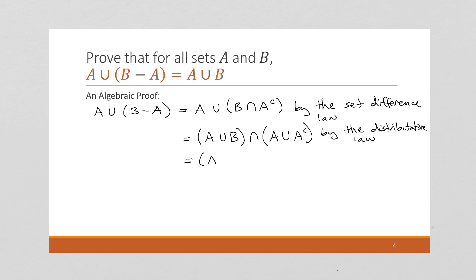So I can say this is (A union B) intersection with the universal set, and this is by the complement laws.